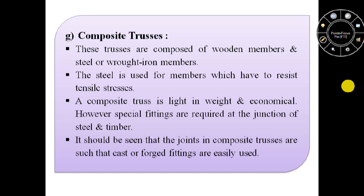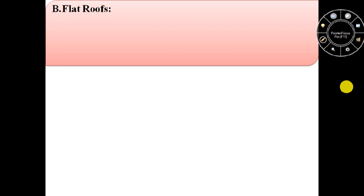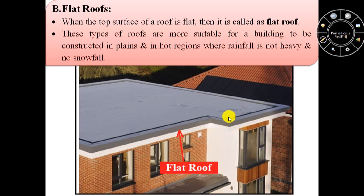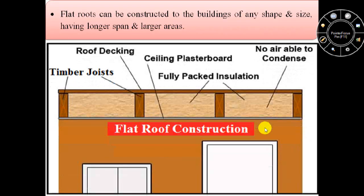The first type of roof, pitch or sloping roof, is now finished. The second type of roof is flat roof. When the top surface of a roof is flat then it is known as flat roof. Flat roofs are more suitable for buildings constructed in plains and in hot regions where rainfall is not heavy and there is no snowfall. Flat roofs can be constructed for buildings of any shape and size having longer span and larger areas.